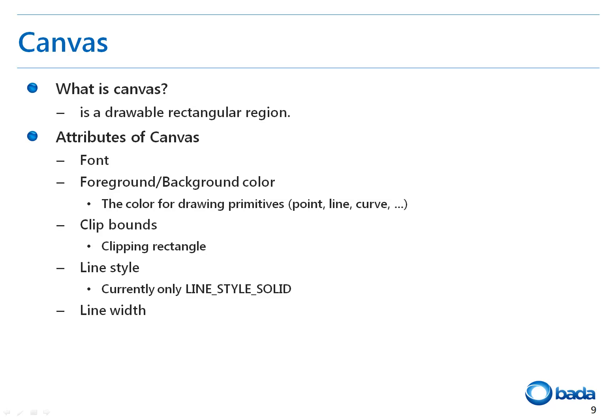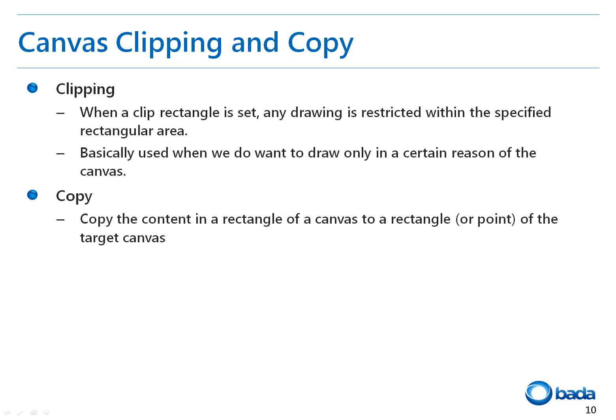Font will be explained later. The foreground color specifies the color when a point, line, or curve is drawn on the screen. We'll look at clip bounds in a later example. The line style only supports a solid line at present. The line width determines the width of the line to be drawn. If we specify the clip bounds using the setClipBounds function and draw an object beyond the boundary of the clip bounds, we can only see those parts of the object within the boundary. The canvas also provides a function to extract a part of the canvas and copy it to another area.